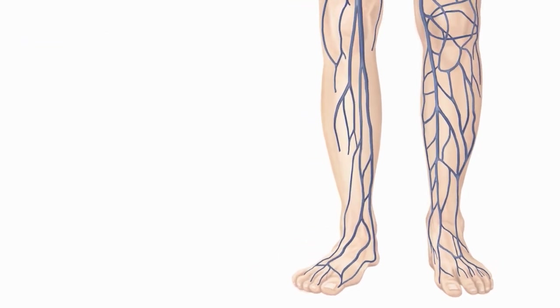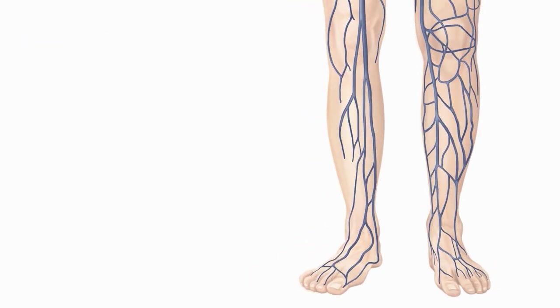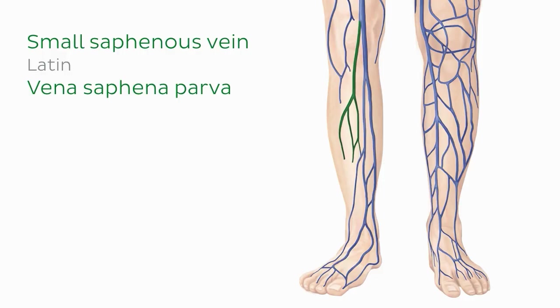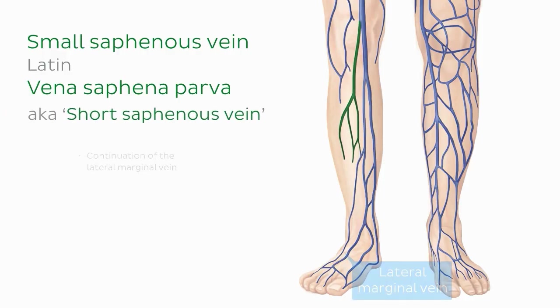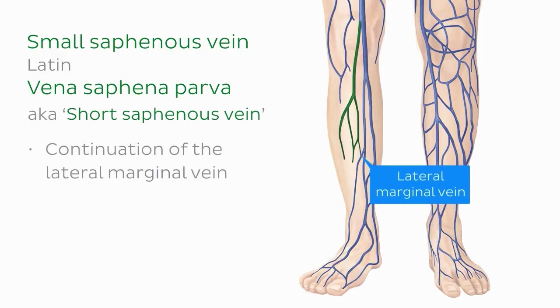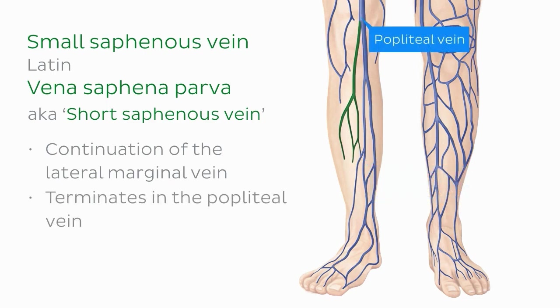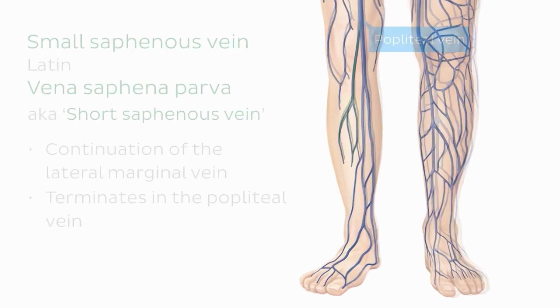Now let's follow the veins upward toward the leg. The small saphenous vein, also sometimes referred to as the short saphenous vein, is a continuation of the lateral marginal vein. It ascends between the superficial and deep fascia in the distal third of the calf, penetrates the deep fascia at the midline of the calf, then ascends superficially to the gastrocnemius muscle, and eventually terminates in the popliteal vein within the popliteal fossa. The small saphenous vein has many branches which communicate with the great saphenous vein.